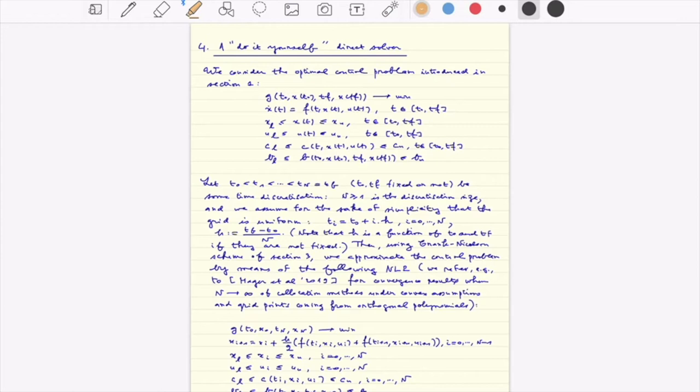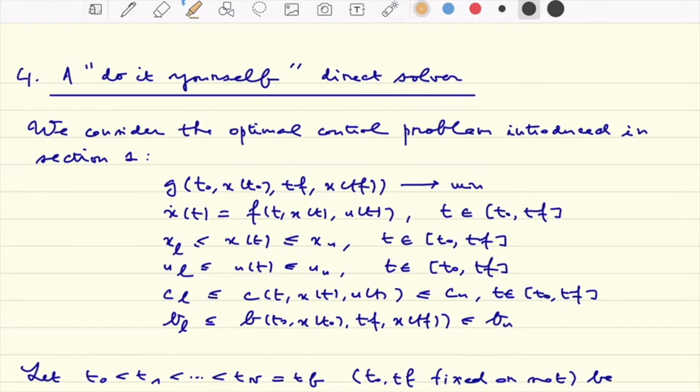So we're finally ready for our do-it-yourself direct solver definition. Clearly it is quite obvious that given such a problem, which is the control problem, I have rewritten the formulation, the quite general formulation we gave at section one, one could quite easily guess how to discretize it using Runge-Kutta scheme.